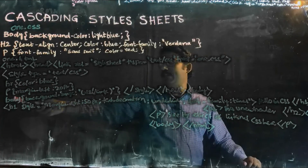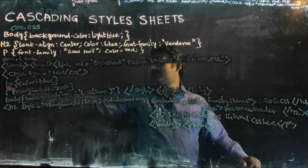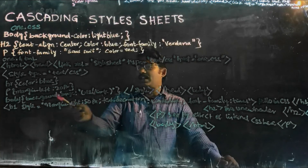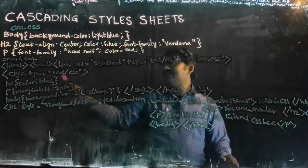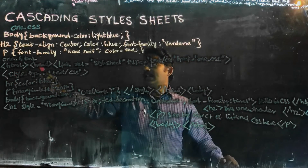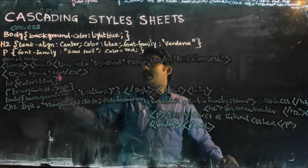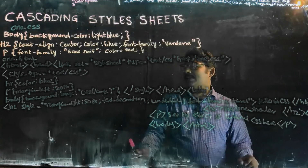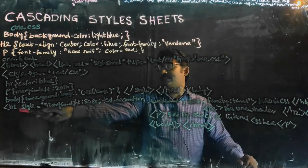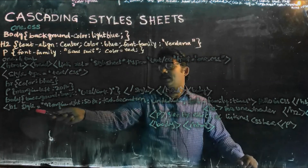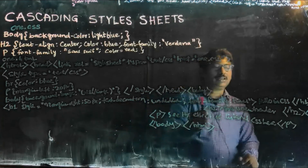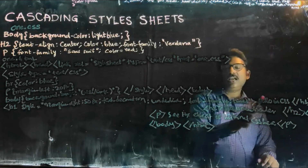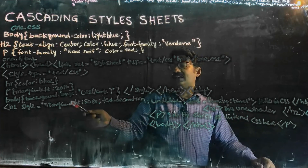Then comes the style section with type text slash CSS. HR has color blue. Then P has left margin 20px. This is within the head section — we are giving some internal CSS code and calling the particular one dot CSS external file. Then the inline code — that means inline CSS — is given as H1 with a style attribute, with margin and other inline properties. This line is continued with 'Hello in CSS'. This is the inline cascading style sheet.